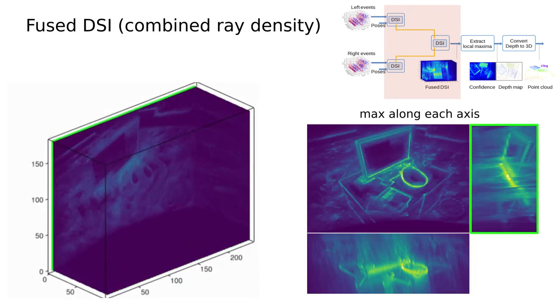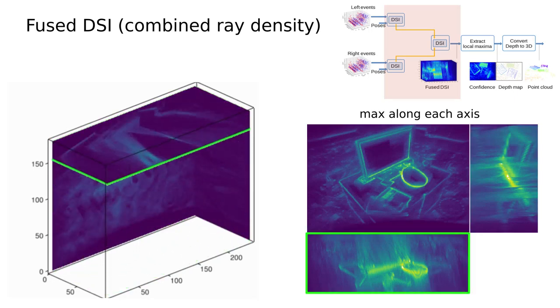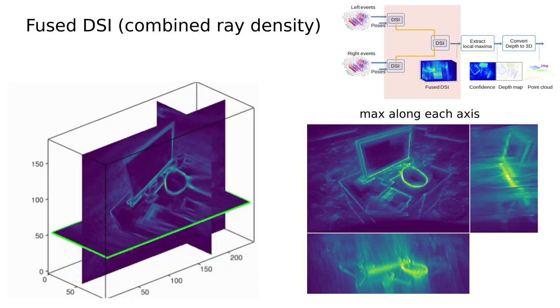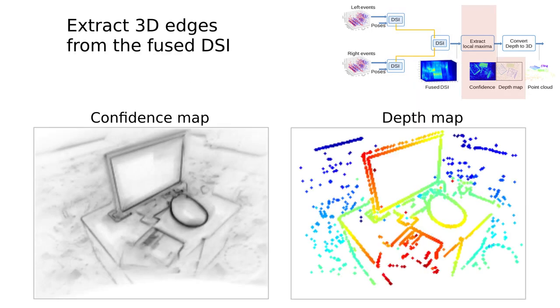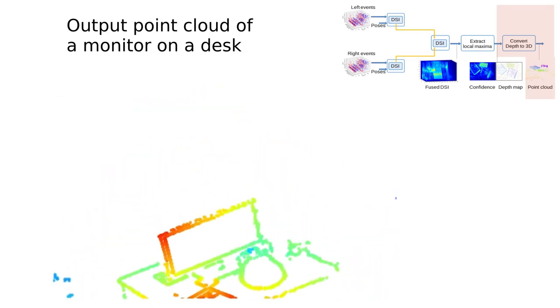Each voxel in the fused DSI counts the number of back projected rays intersecting at that location. Sweeping across a depth axis, edge features come into focus only at the correct depth. The depth and its confidence at each pixel are extracted using local maximum of the fused DSI. We finally obtain a point cloud of the scene from the filtered depth map.